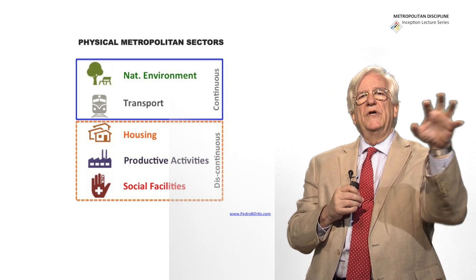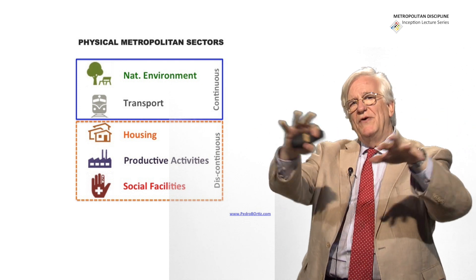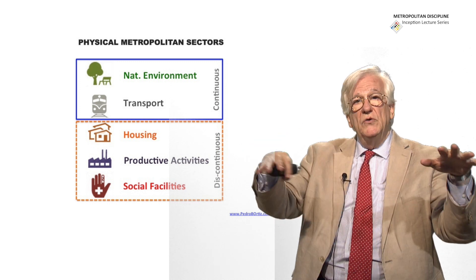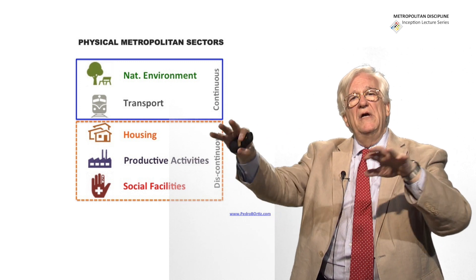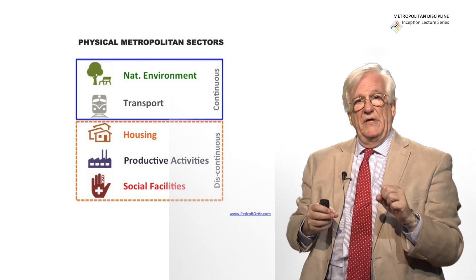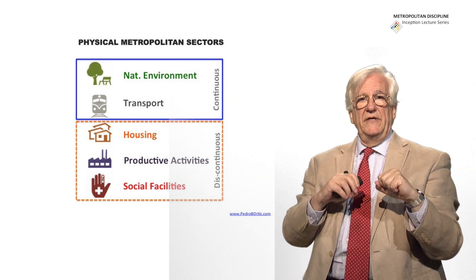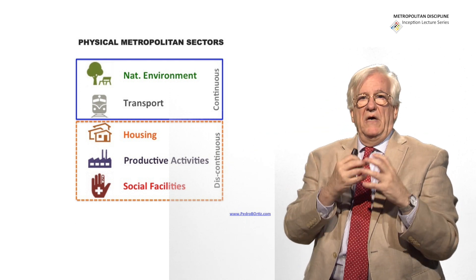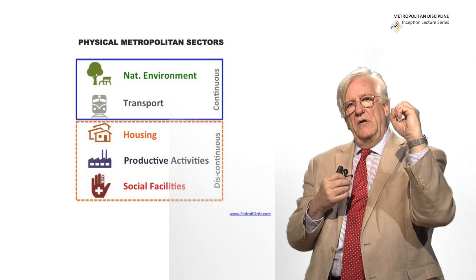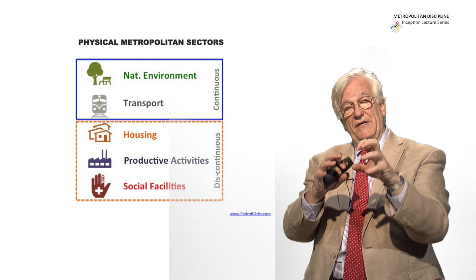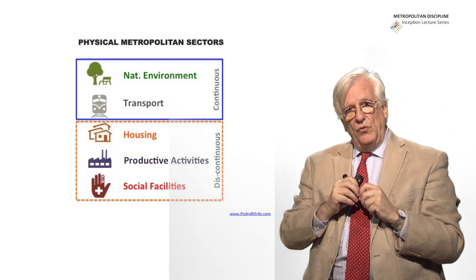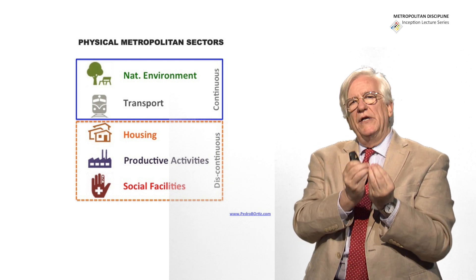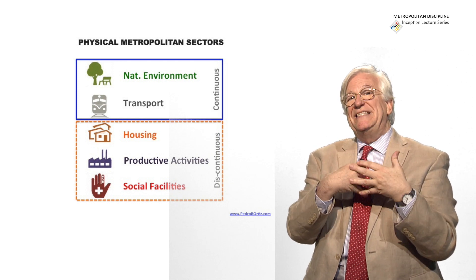Housing is a system. Depending on where you put some houses, it is going to affect the pattern of transport, the pattern of distribution of goods, the flows of elements, and the other housing wherever in the metropolis. The income level of that housing is going to affect many other aspects. So housing is a system. Hospitals is a system. Depending on your cancer hospital or maternity hospital, it's a system. And they are all related together and sitting in space, but they don't need to be together or one next to the other. So they are discontinuous systems.